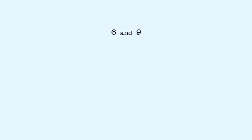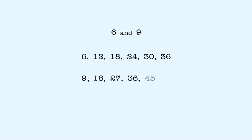Another example: 6 and 9. First, we list several multiples of 6. Next, we list several multiples of 9. The smallest number that's a multiple of both 6 and 9 is 18.